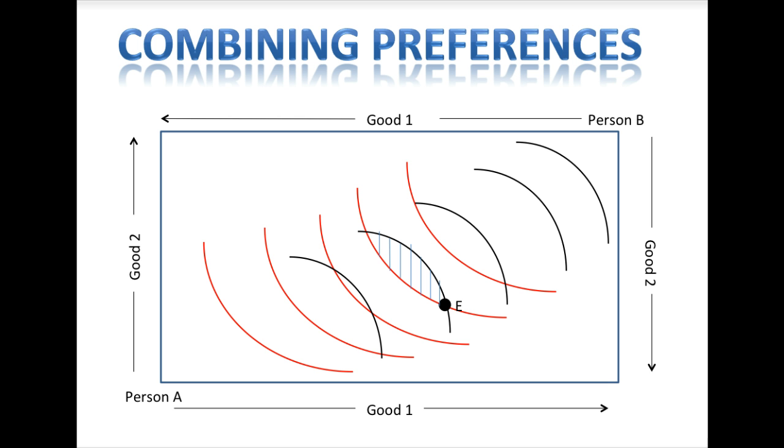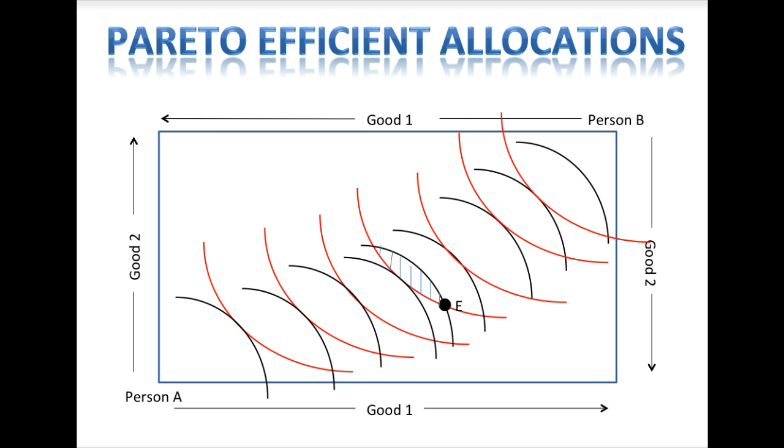To figure out where in the region the parties will end up, we need to find the Pareto-efficient allocations. You may recall that if an allocation is Pareto-efficient, then it is not possible to make one person better off without making someone else worse off. Since at that allocation someone would be made worse off by another transaction, then they won't make another trade from that point. Thus, another way to describe a Pareto-efficient allocation is to say that at that point there are no more gains from trade available. The points from which neither party will be willing to trade are the points where Person A's indifference curves and Person B's indifference curves are just tangent to each other.